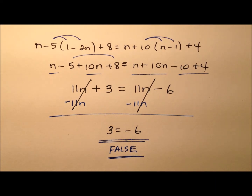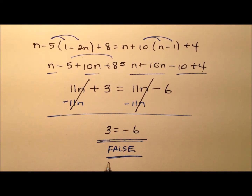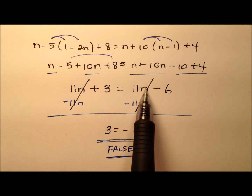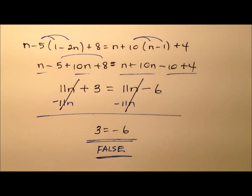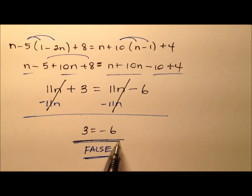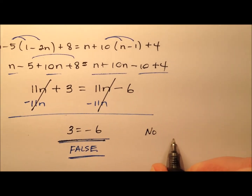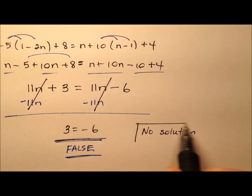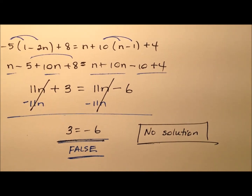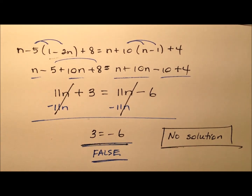3 does not equal negative 6. We notice that all the variables have canceled out, so it doesn't really matter what value we plug in for our variable — they're always going to cancel and you're always going to be left with a false statement. This equation, in fact, has no solution, because there is no value that I can plug in for the variable that will end up making it true.